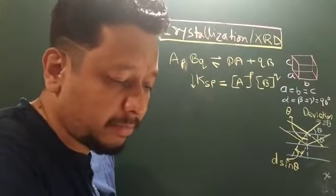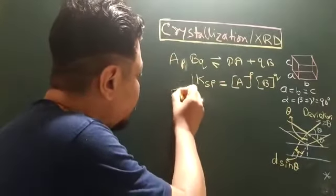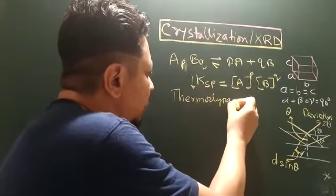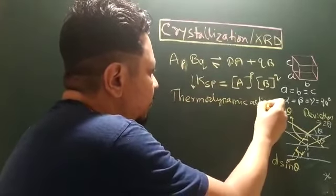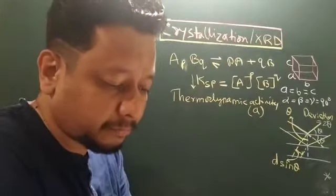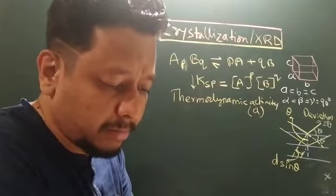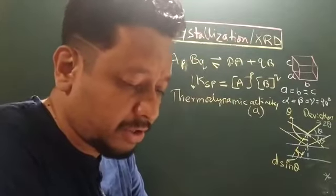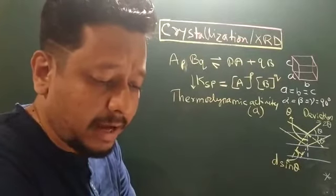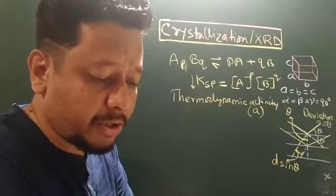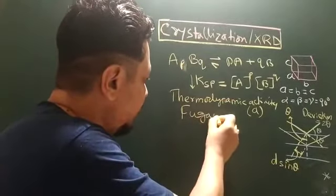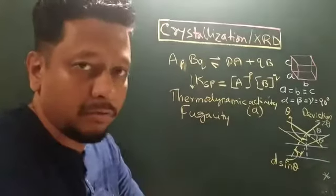In chemistry, thermodynamics activity, denoted as A, is a measure of the effective concentration of a species in a mixture. For gases, the activity is the effective partial pressure and usually referred as fugacity. This is for the gas. We use this term.